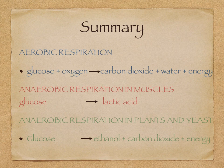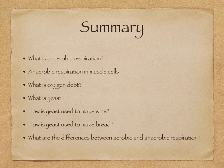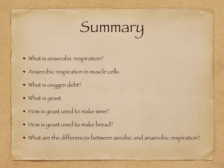In summary, we looked at aerobic respiration in the last topic, and anaerobic respiration in muscles and plants in this topic. You need to know the word equations, and if you're doing extended, the equations in symbols. We covered: the definition of anaerobic respiration, what happens in muscle cells, oxygen debt, yeast and how it's used to make wine and bread, and the differences between aerobic and anaerobic respiration. That concludes our lesson.